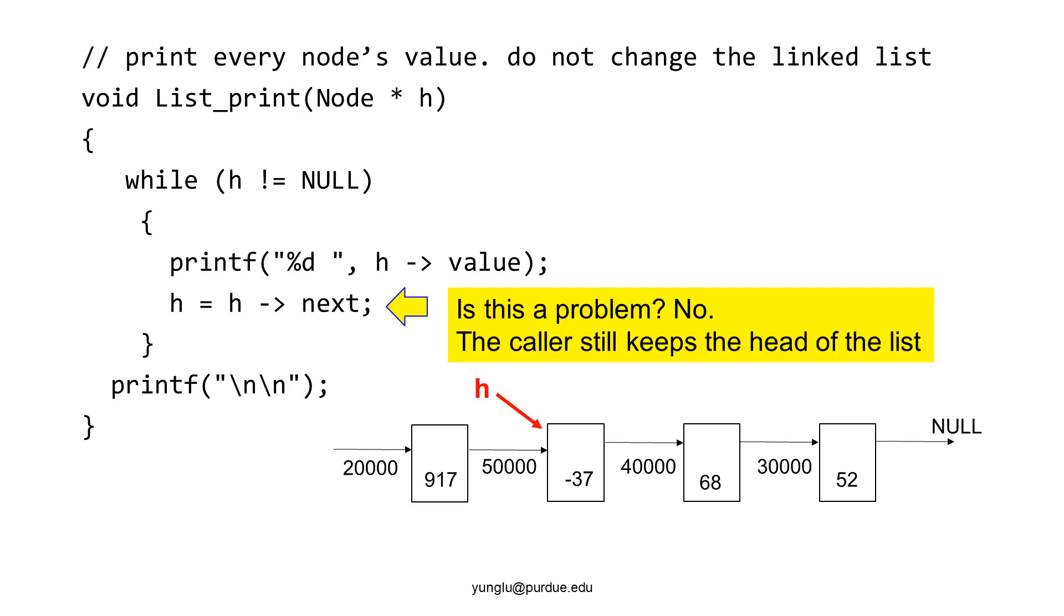It is correct that we will lose the link inside this function because h has moved. However, this is not a real problem because the caller of this function should still keep the first node of the linked list. The function visits every node until reaching the end of the linked list.